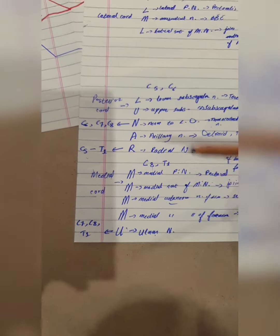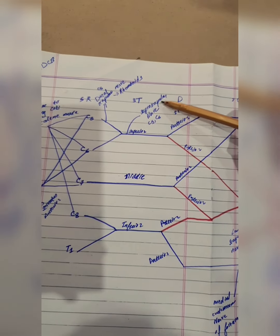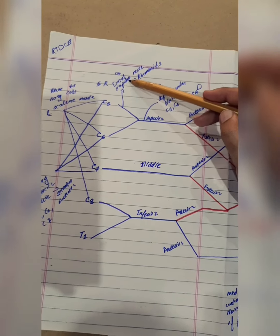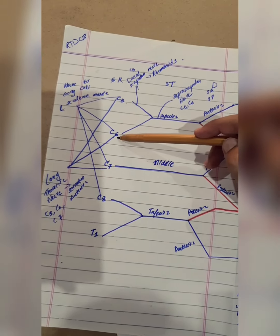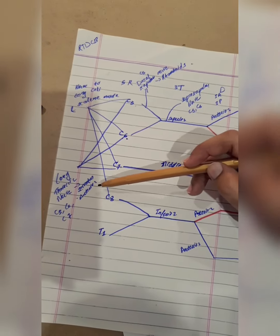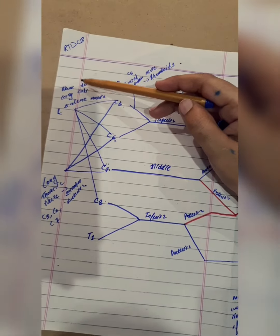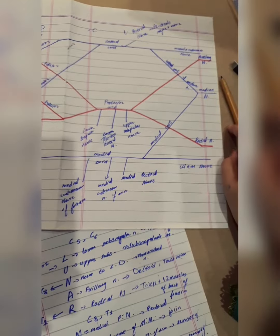So that was all about the major and minor branches from the cords. We also saw minor branches from the trunks — the suprascapular nerve — and from the roots: from C5 the dorsal scapular nerve supplying the rhomboids, and from C5, C6, and C7 the long thoracic nerve. Thank you so much — keep watching my channel. If you like it, please share. Allah Hafiz.